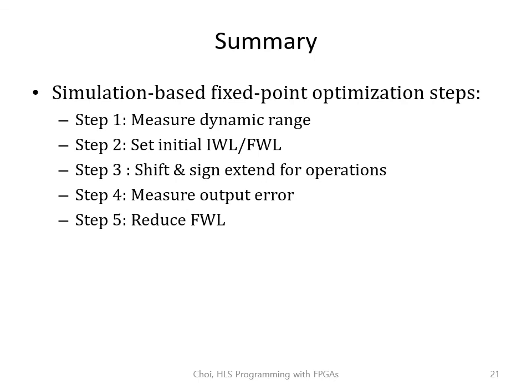Here is the summary of today's lecture. We have learned the simulation-based fixed-point optimization steps: measuring the dynamic range, setting the initial IWL and FWL, shift and sign extension for operations, measuring the output error, and reducing the FWL. You can iterate steps 4 and 5 until you meet the error threshold. We'll wrap up the CORDIC chapter here, and continue with new content in the next lecture. See you then!